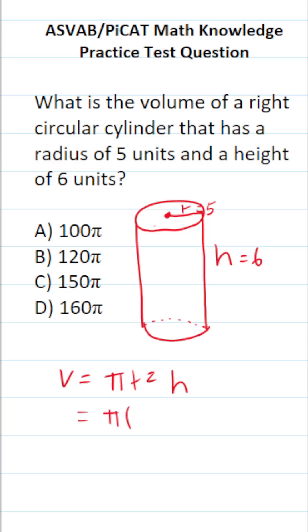This becomes pi times five squared times six. This becomes pi... Five squared is five times five, which is 25, times six.